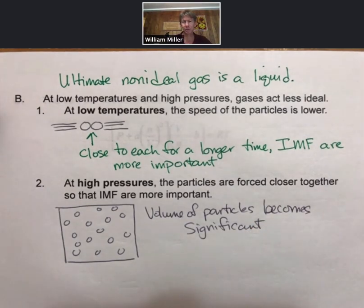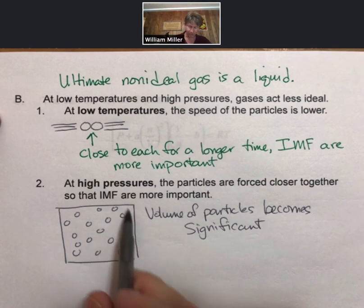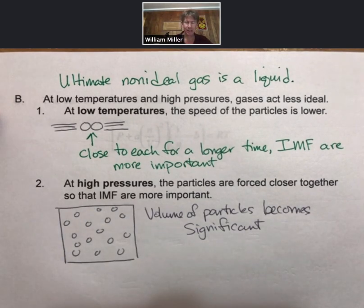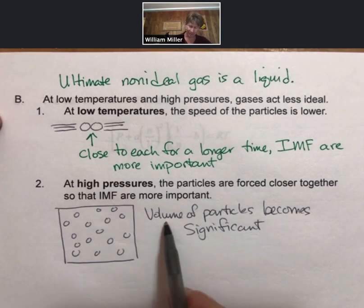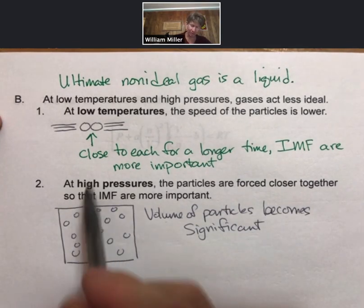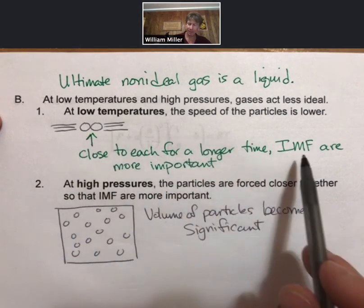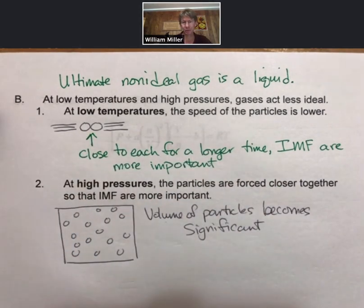Therefore, our picture of an ideal gas as one particle in this entire space is no longer true. Now, they're closer together, so the volume is affected. They're closer together in general and moving more slowly, so intermolecular forces are also important under both of these conditions.